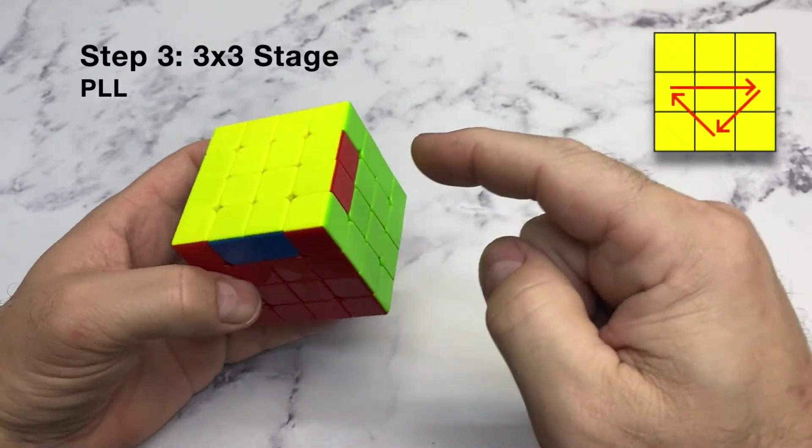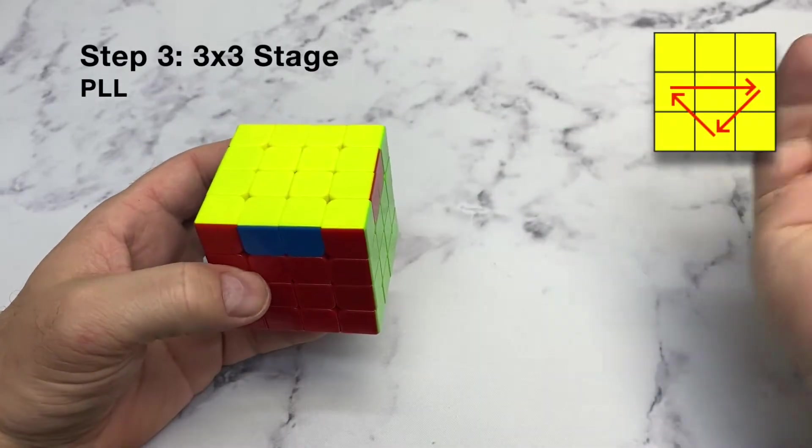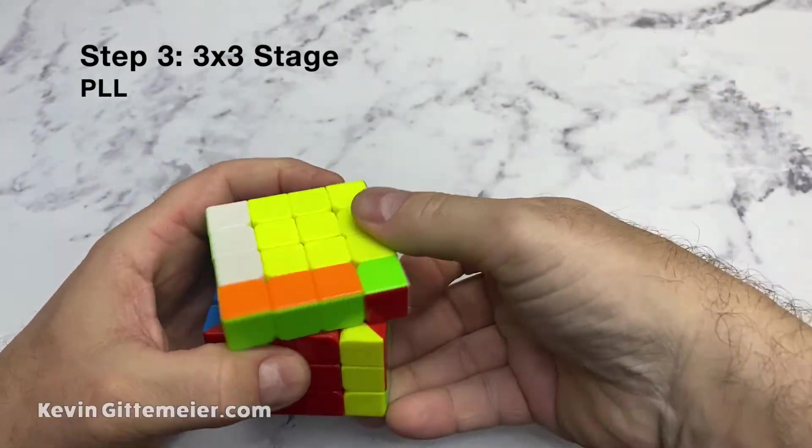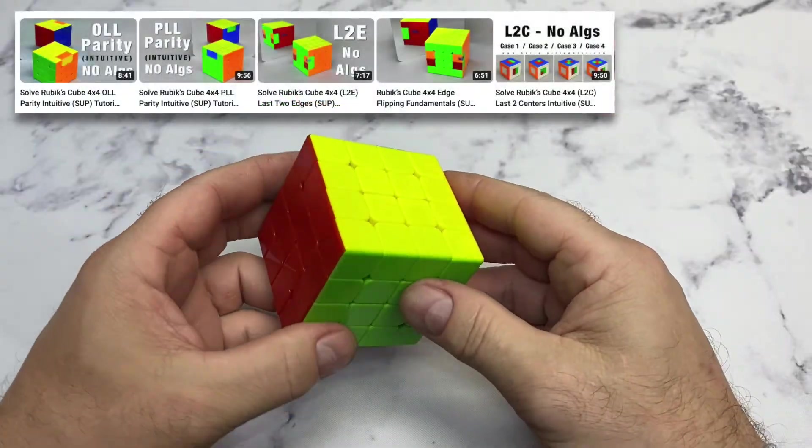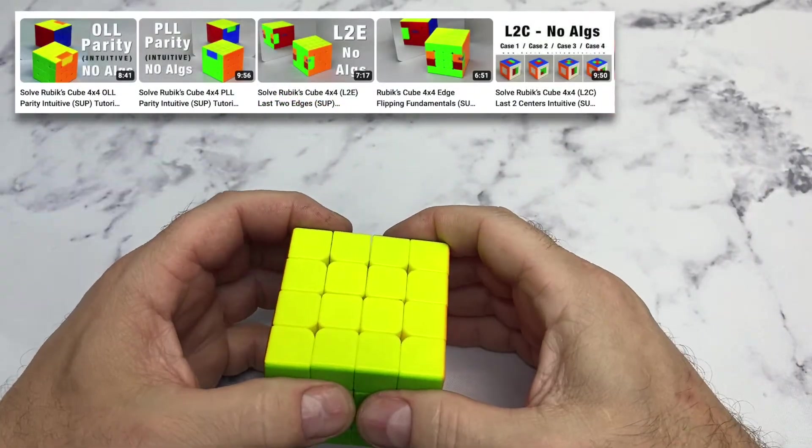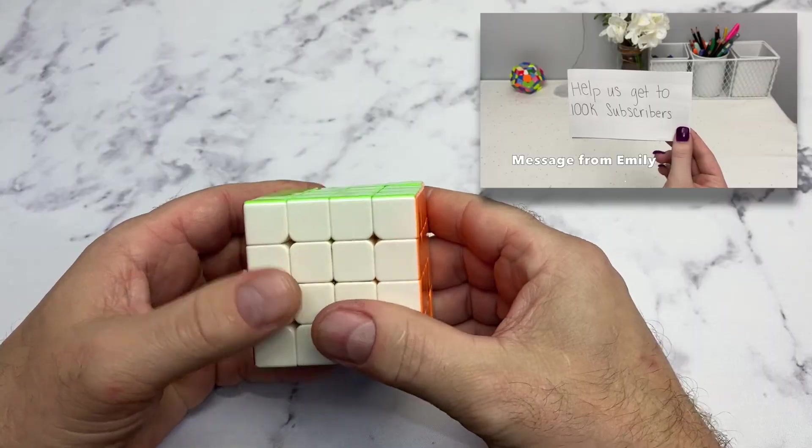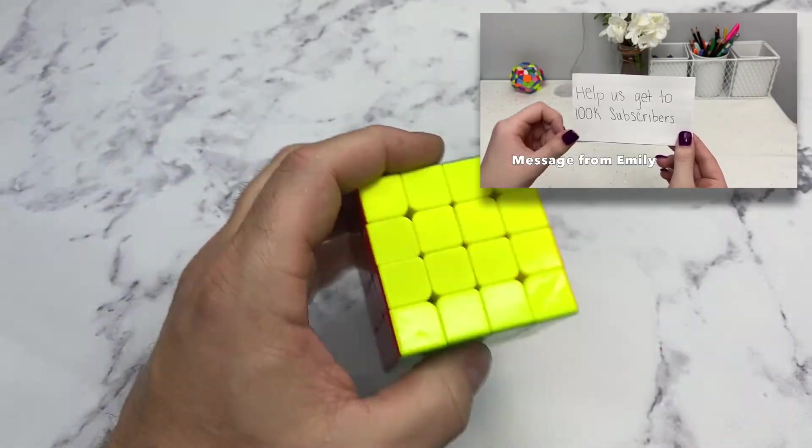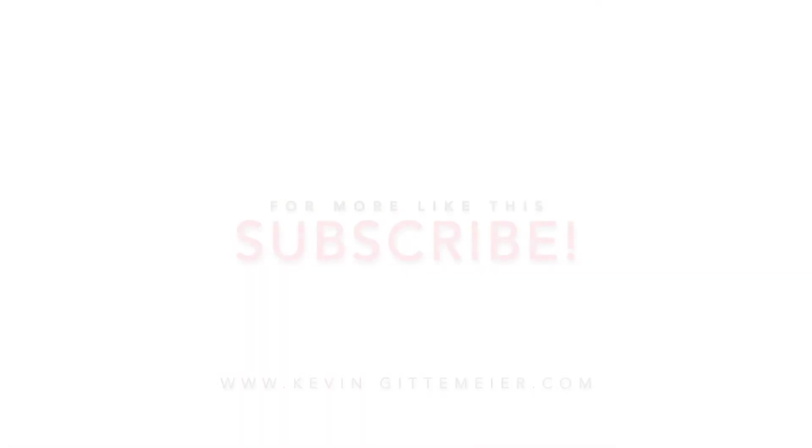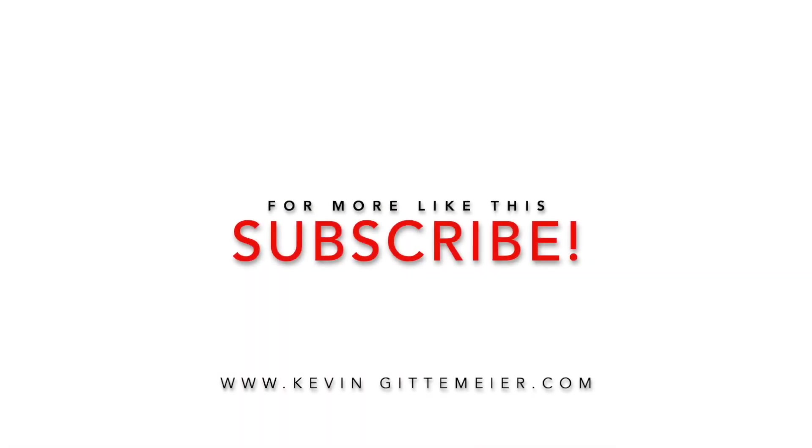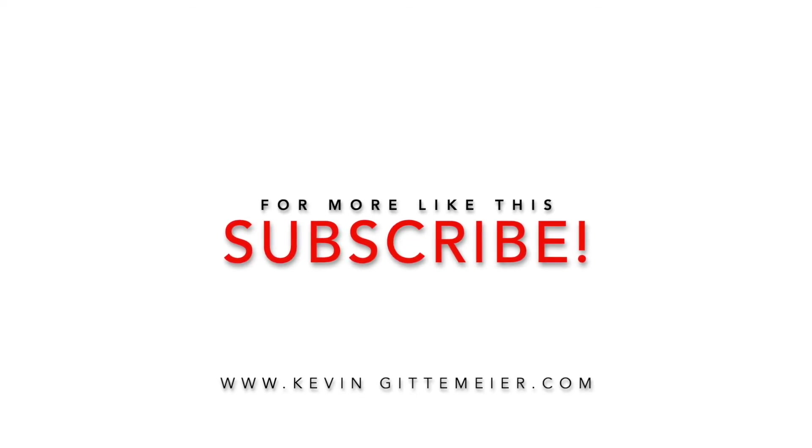And then what happens is you end up with a standard 3x3 case that's solvable. So, for example, I know this needs to go here, this here, and that there. So, now we're reduced down to a standard case. And if you have any trouble with that, watch my full tutorial. Watch the supplemental tutorials. I just wanted to try to do a quick example solve that was less than four hours like my tutorials are.